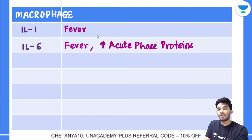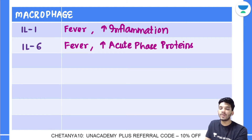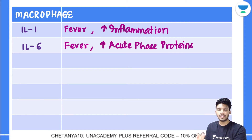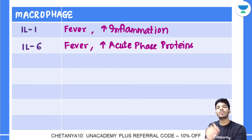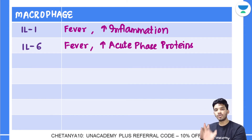Interleukin-1 also increases the acute inflammatory process — it's a pro-inflammatory cytokine that activates adhesion molecules and attracts more WBCs. Some people also call it the osteoclast activating factor, though I'm keeping it concise here.